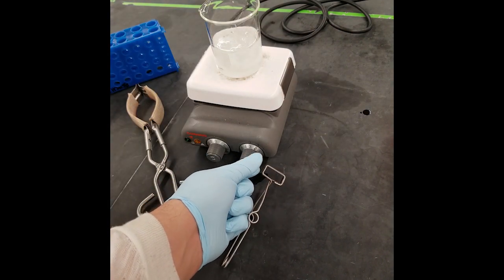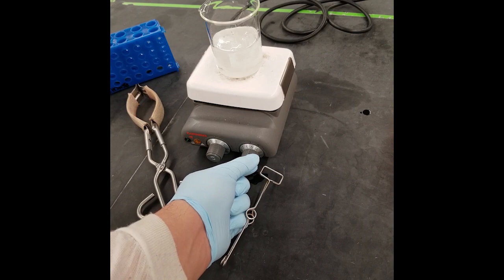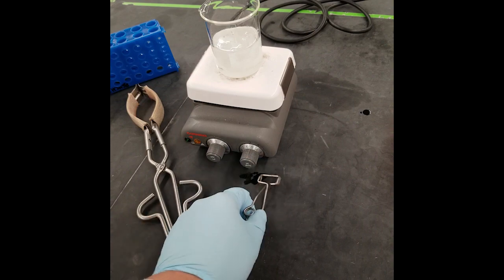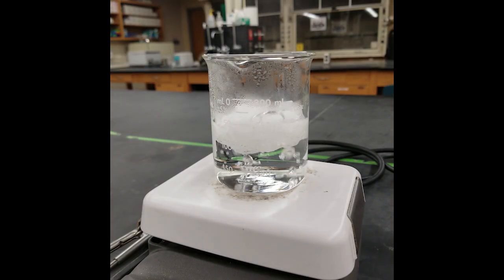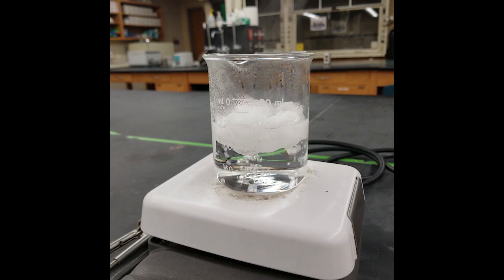This setting will vary depending on the make and model of your hot plate, but essentially you want a very soft boil within 15 to 20 minutes. Seeing your water boil is a visual indicator that the temperature is at least 100 degrees Celsius, but your teaching fellows also have thermometers to verify the temperature of your water.